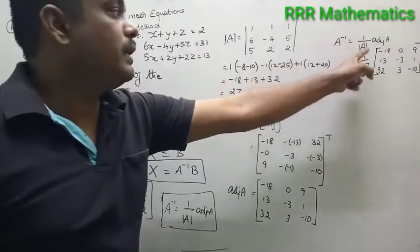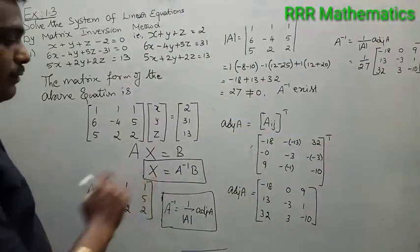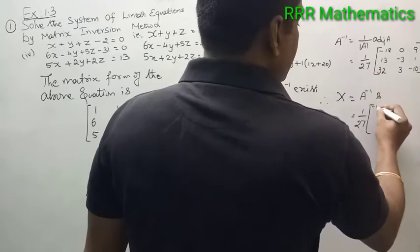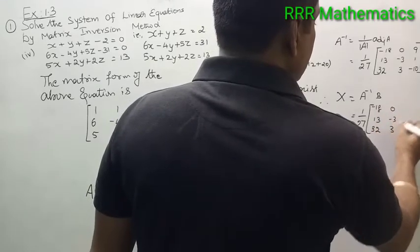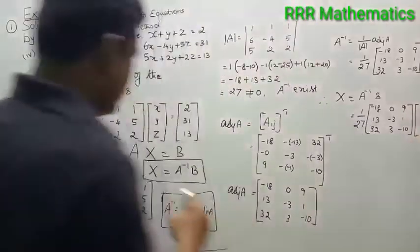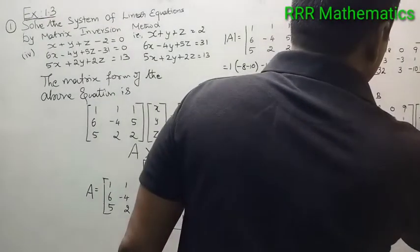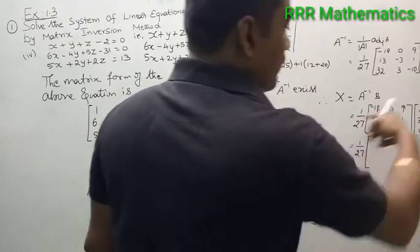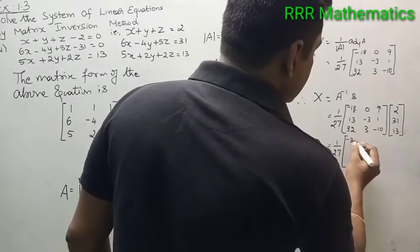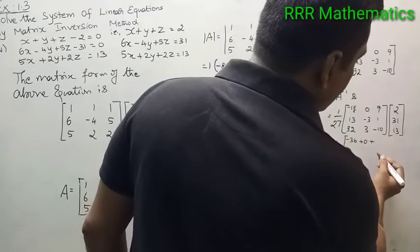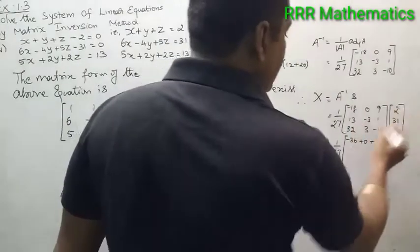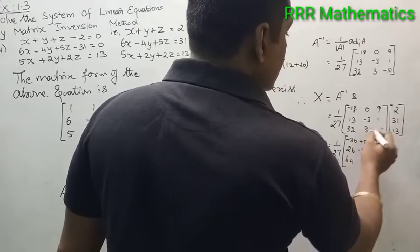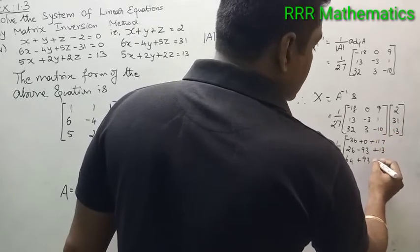Got it? A inverse equals 1 by 27 into adjoint A. Now you want to find x, so x equals A inverse into b. A inverse is 1 by 27 times the matrix: minus 18, 0, 9 / 13, minus 3, 1 / 32, 3, minus 10. And b is the column matrix: 2, 31, 13. Always the product of A inverse and b gives a column matrix. Multiplying: row 1: minus 18 times 2 = minus 36, 0 times 31 = 0, 9 times 13 = 117; row 2: 13 times 2 = 26, minus 3 times 31 = minus 93, 1 times 13 = 13; row 3: 32 times 2 = 64, 3 times 31 = 93, minus 10 times 13 = minus 130.